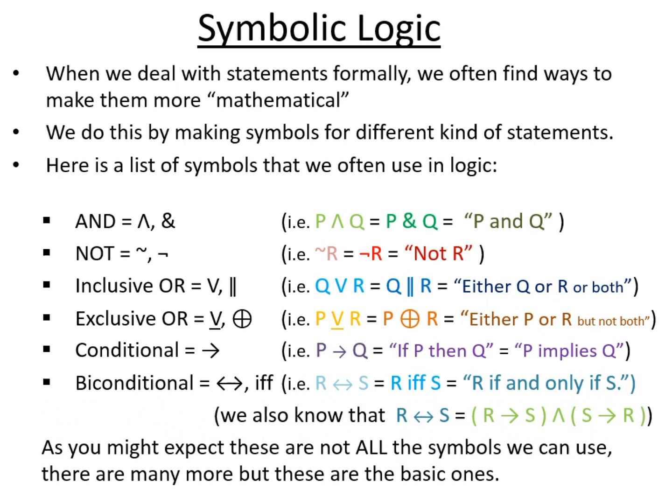So we can also show that the biconditional is the conjunction of two reversed conditionals. In other words two conditionals where the first statement and the second statement are traded, swapped around and those two conditionals are placed in a conjunction. So as you might expect there are other symbols that we can use, but these are the basic ones and the ones that we will stick to in what we study.